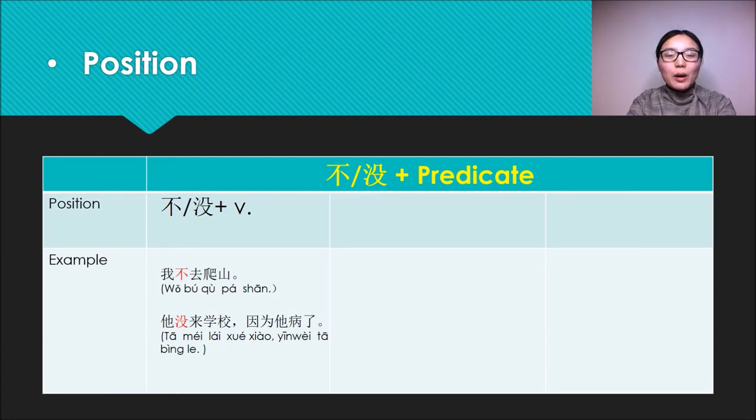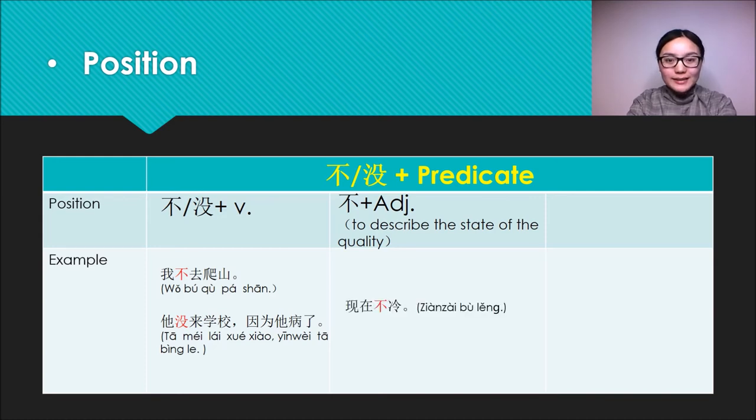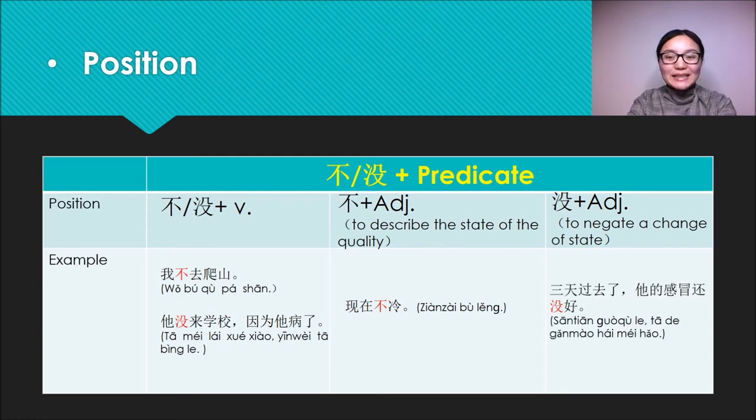Bu can also be put before an adjective to describe the state of the quality. For example: 现在不冷 (it is not cold now), so it's about the state of the temperature. Mei can also be put before an adjective, but it is used to negate a change of state. For example: 三天过去了他的感冒还没好 (he hasn't recovered from his cold after three days). So this sentence we use Mei to negate a change of state.